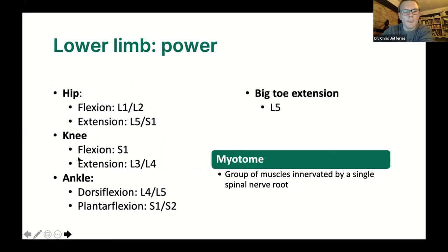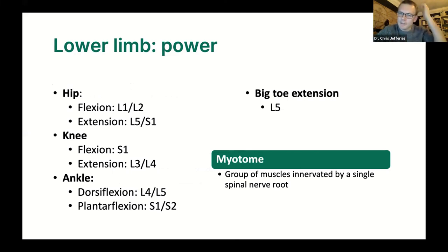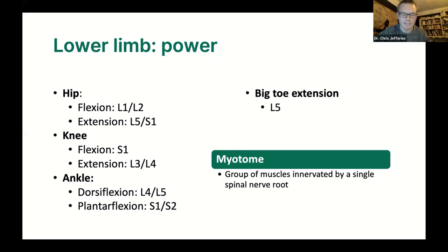For power in the lower limb, look at a clinical skills video for exact phrasing. Try to isolate the joint, and remember you're testing different nerve roots and myotomes. There is some variation between textbooks regarding which nerve roots correspond to which movements, so don't worry too much. Work through methodically: hip flexion and extension, knee flexion and extension, ankle movements, and then you can test the big toe as well.